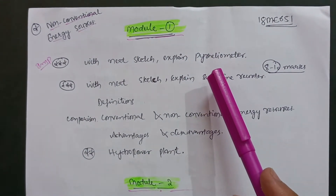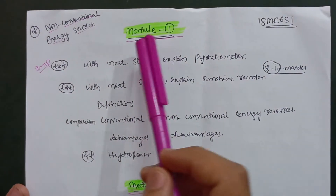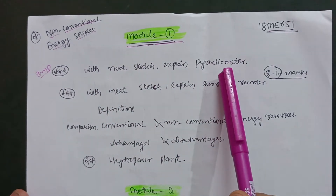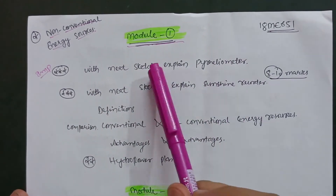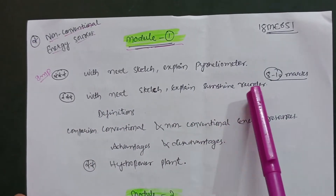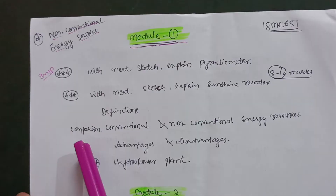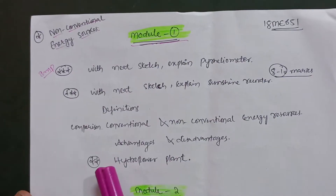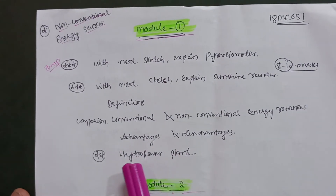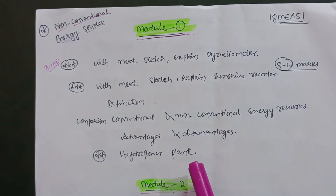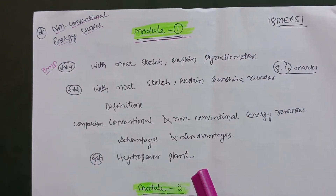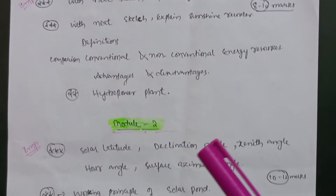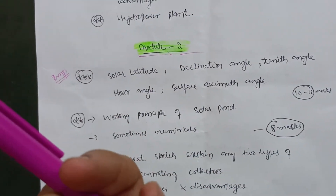Probably one day and one night are left now. In Module 1, just focus on this super important question: with neat sketch explain pyrheliometer. It is a very important question in Module 1. Also, with neat sketch explain sunshine recorder. Some definitions are there like comparison between conventional and non-conventional energy resources, advantages and disadvantages. One important question from this module is the hydropower plant. Focus on this much theory content — you can easily score at least 10 to 12 marks in Module 1 by theory only.